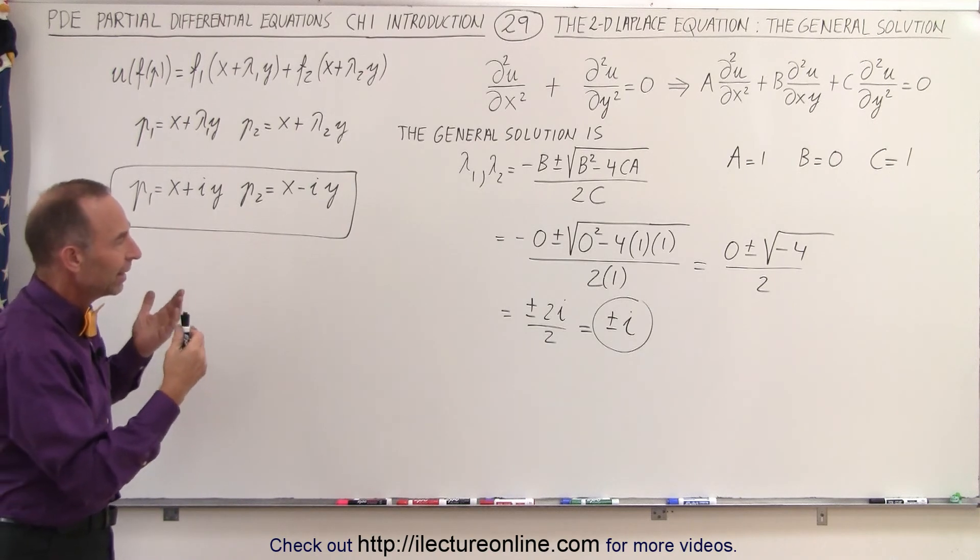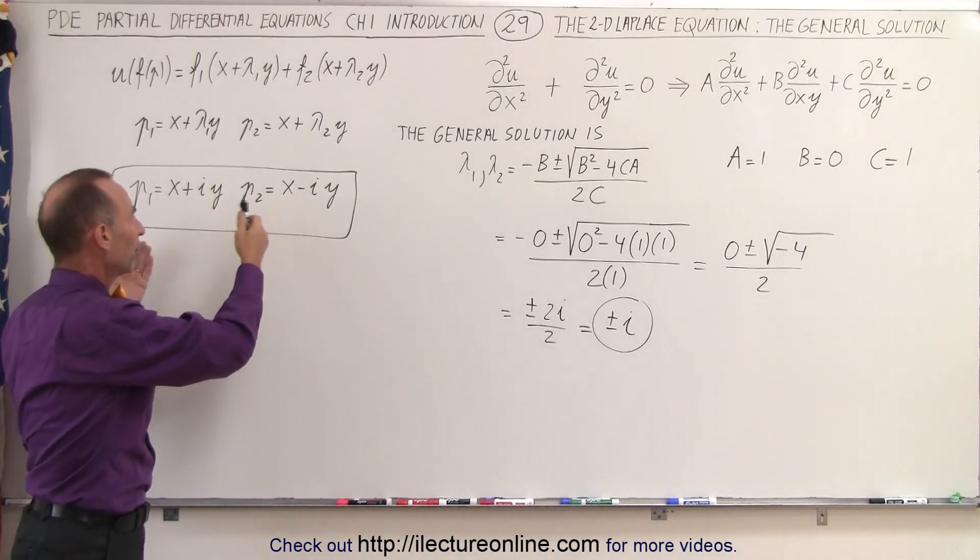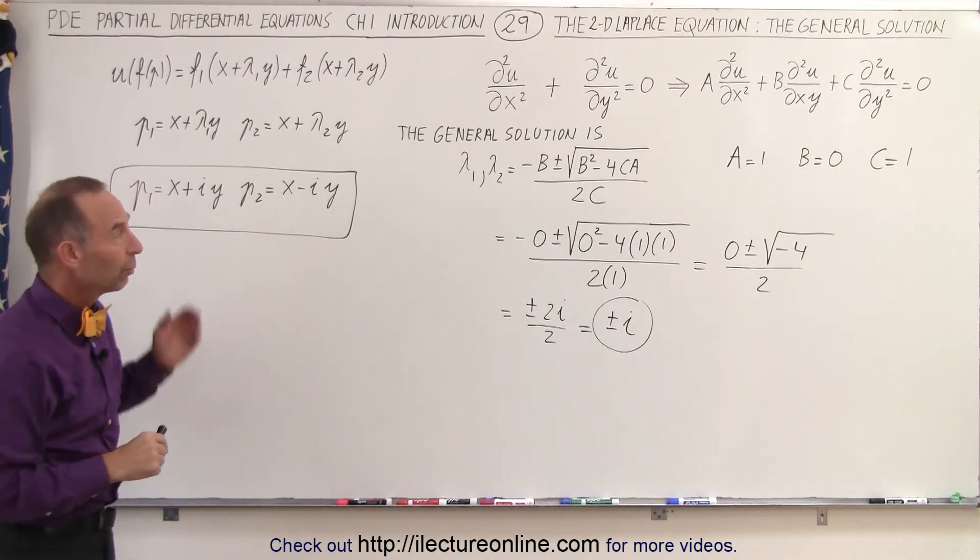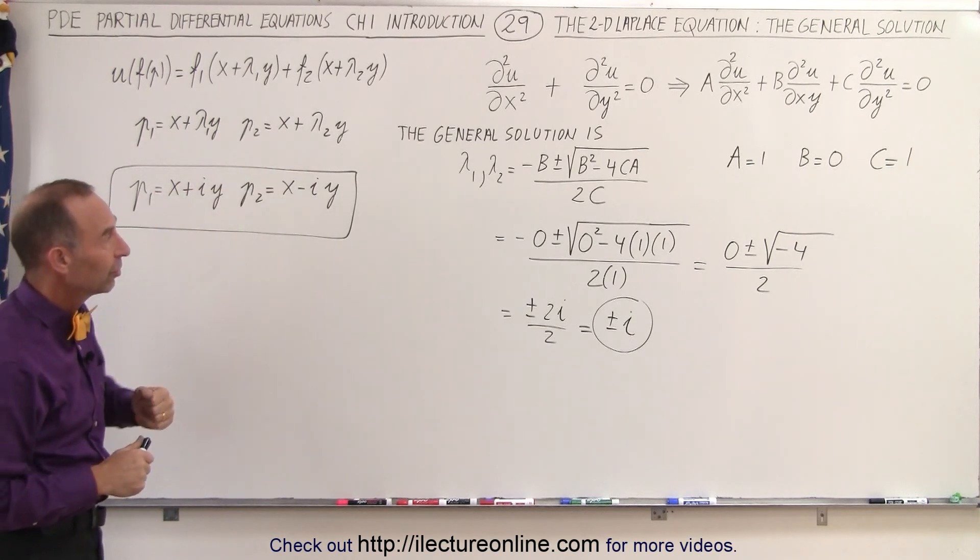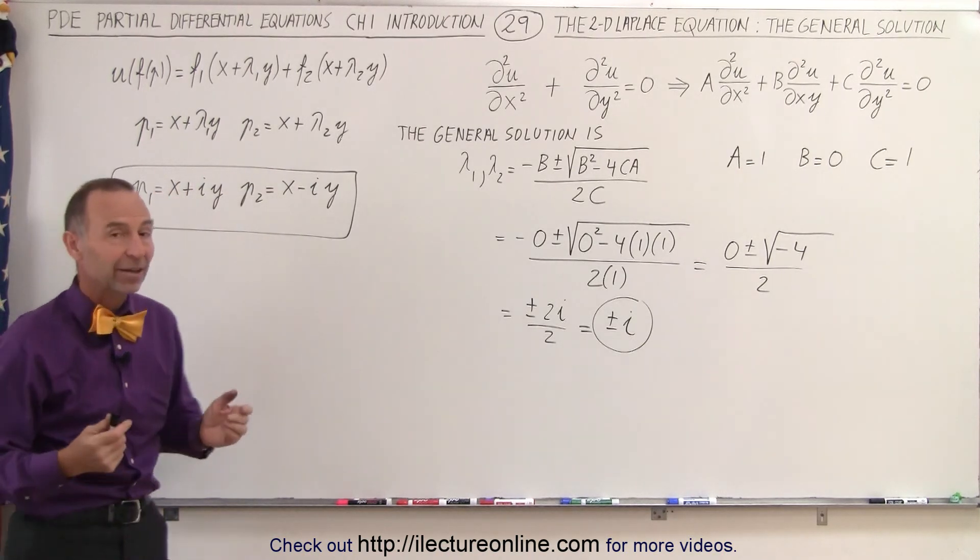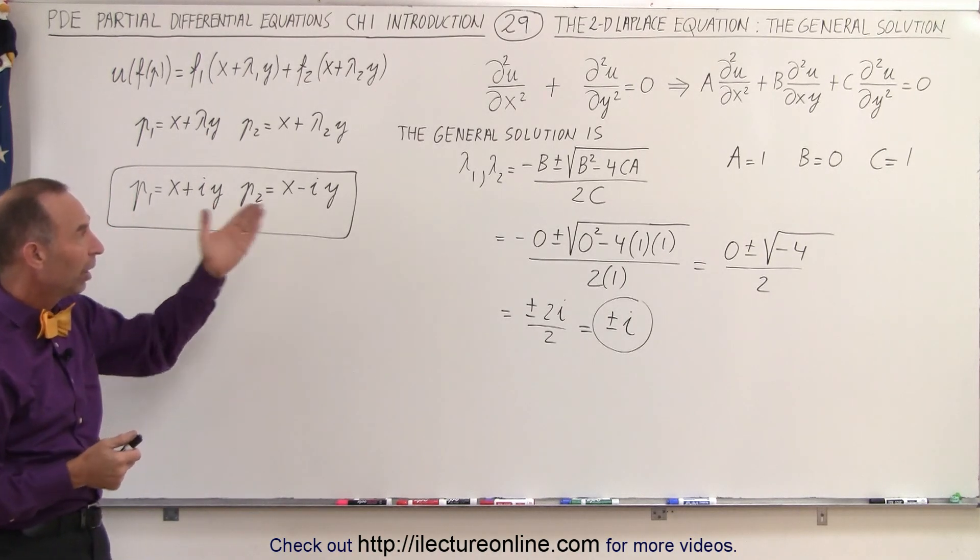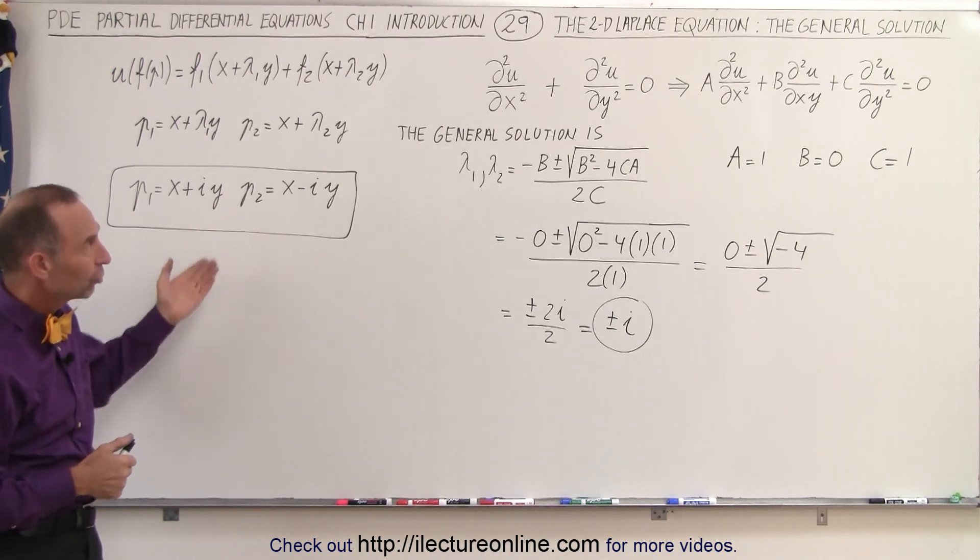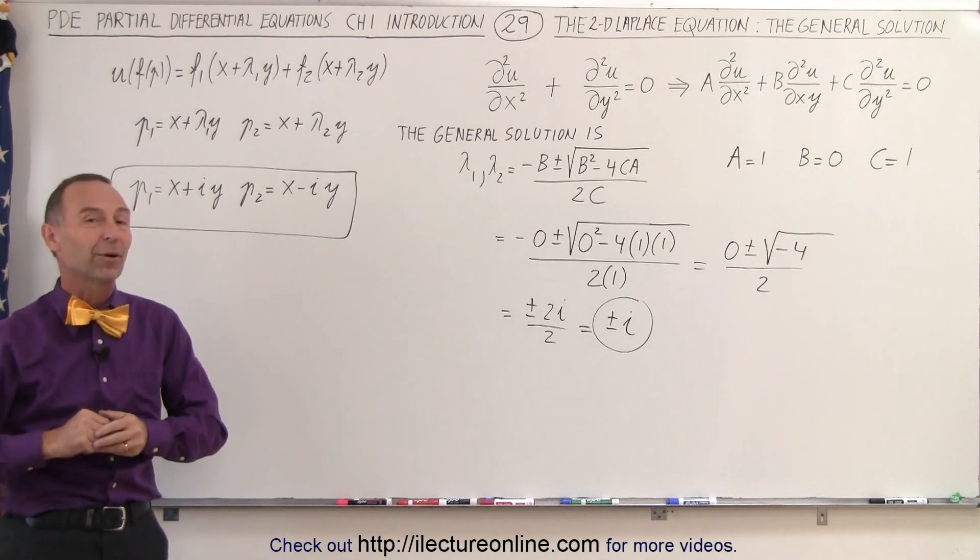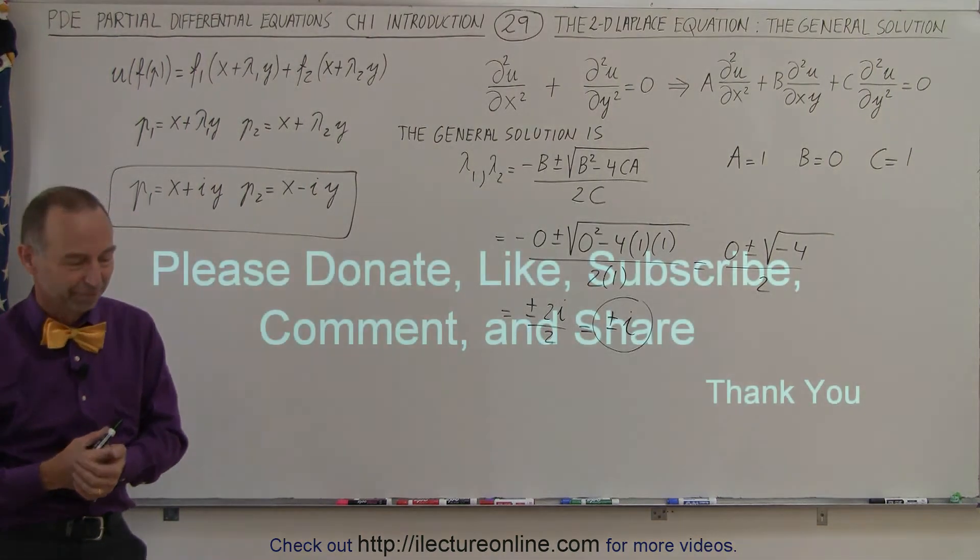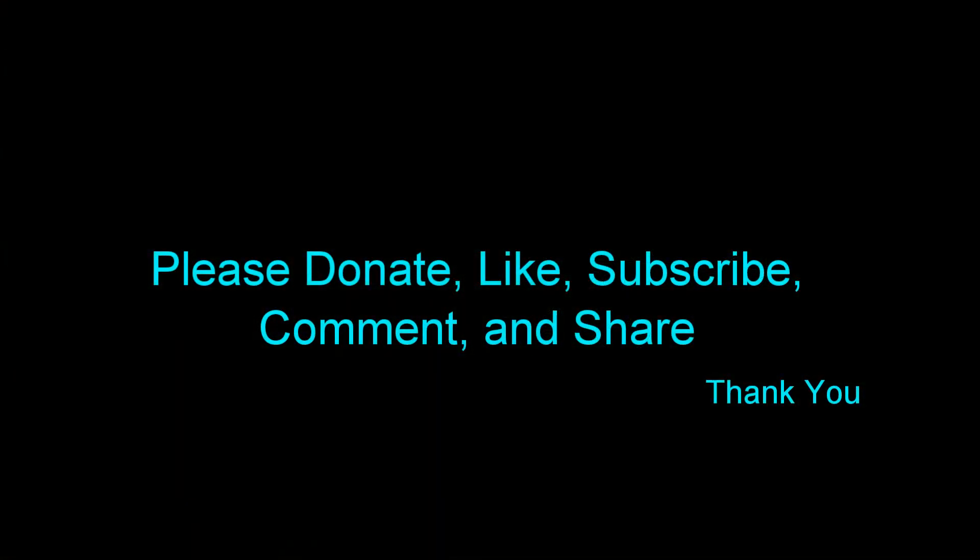So you can see again, now that we want particular solutions, or more exact solutions of this, what we need to do is find some boundary conditions, and using the boundary conditions, we can go ahead and find the exact solution of that equation. But at least, this is the general form of the solution of the two-dimensional Laplace equation, and that's how it's done. Thank you.